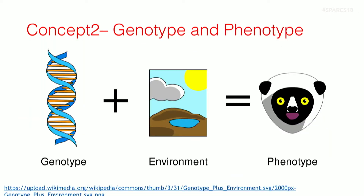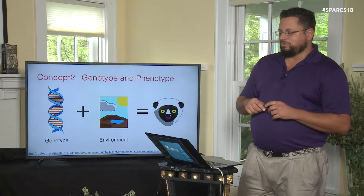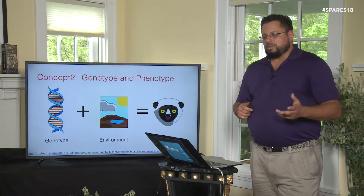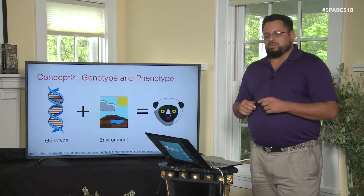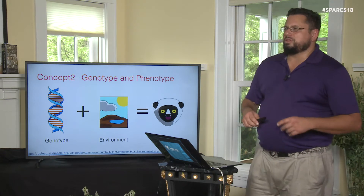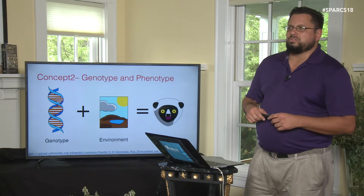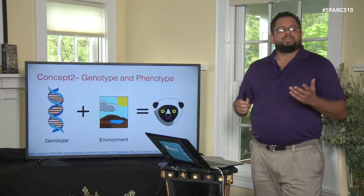Genotype and phenotype — those dogs that were selected still needed to be handled and interacted with. The environment matters. I'm going to talk about some of the genetic changes that were selected for when humans domesticated dogs. Genotype and environment are intertwined. When people ask whether something is nature or nurture, it's really one thing.